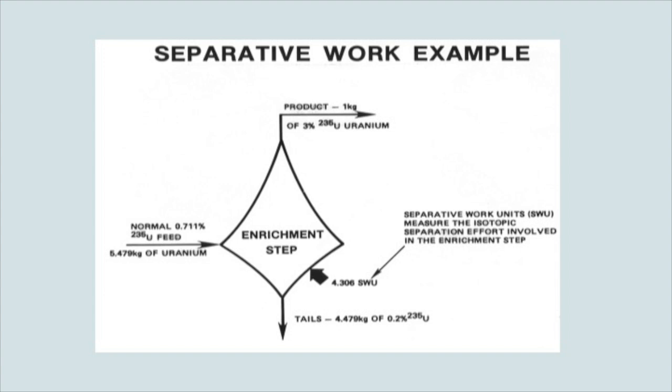So here's an example. So if you have an enrichment step and you feed in seven tenths natural uranium, and in the picture, you've got 5.479 kilograms of uranium. Out the top, you're taking out one kilogram enriched to 3% of uranium-235. The tails are at two tenths percent uranium-235. And in that enrichment, 4.306 separative work units were achieved. You can do your calculations after this lecture, you can do that online on your calculator and use the formula I had before and calculate 4.306 separative work units as shown in this example. And you see that there's an overall material balance and an overall isotopic balance. So that's an example that could be checked out.